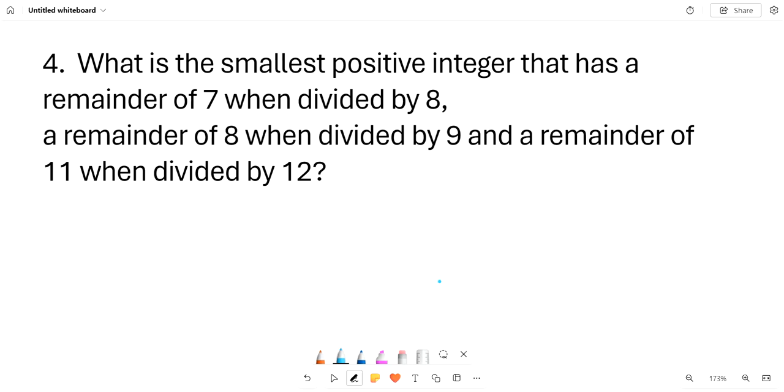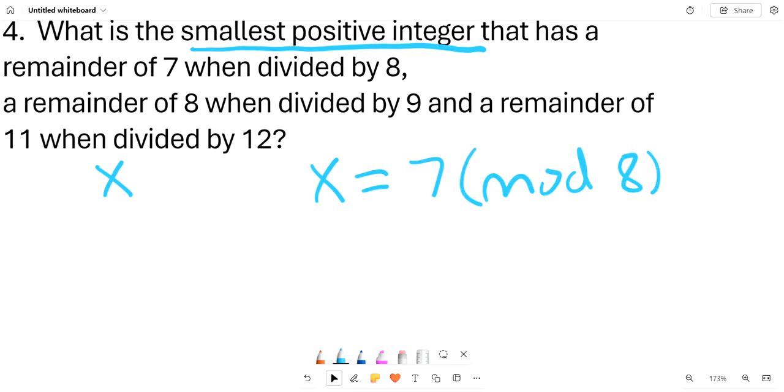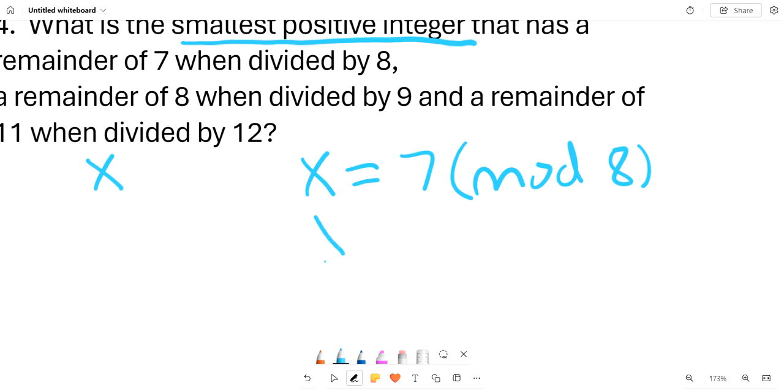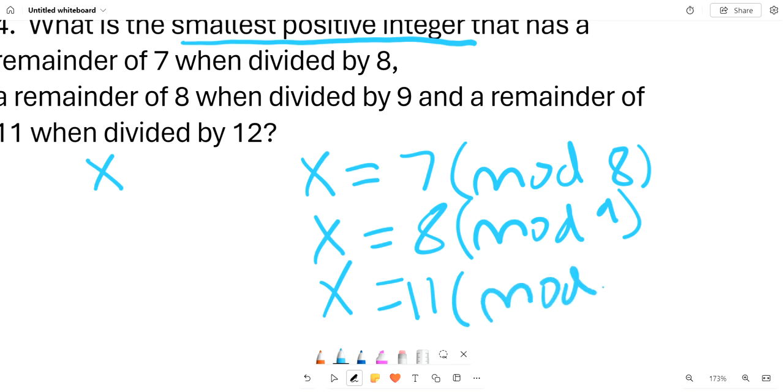Let's say that our smallest positive integer is x. So we can say that x equals 7 mod 8, which means that when x is divided by 8, it has a remainder of 7. And we can write that x also equals 8 mod 9, and x also equals 11 mod 12.